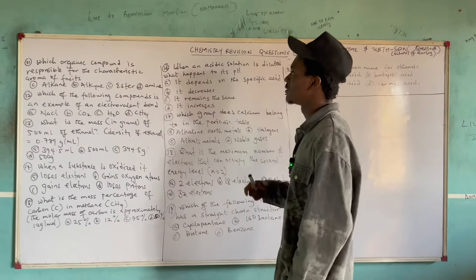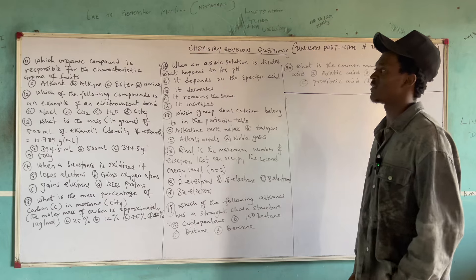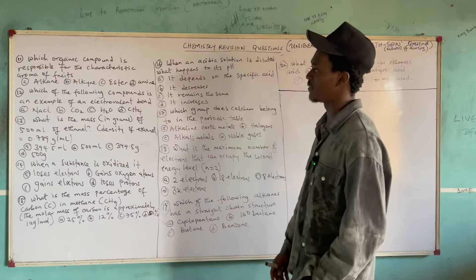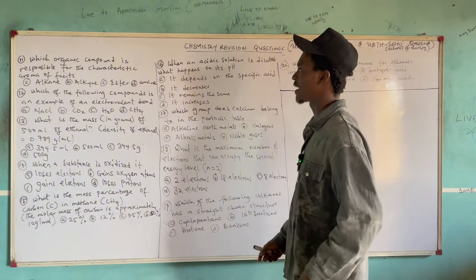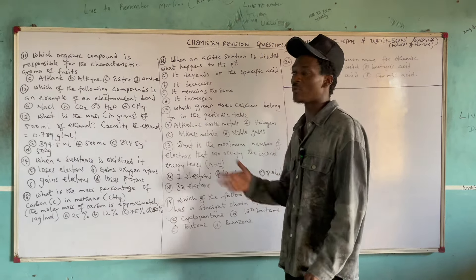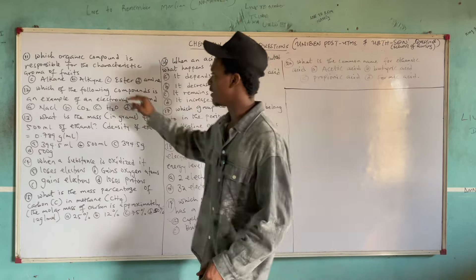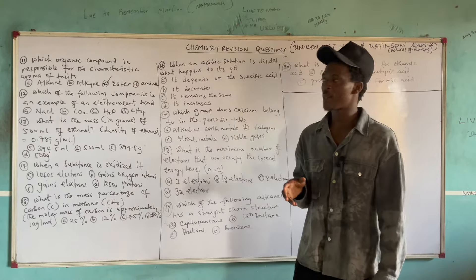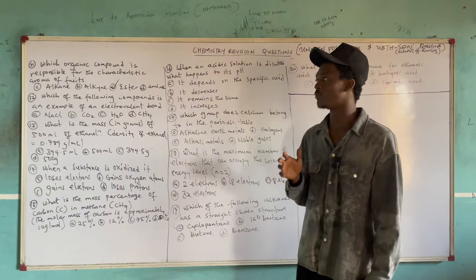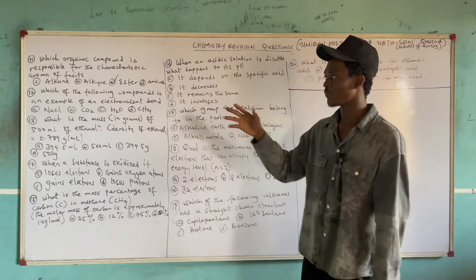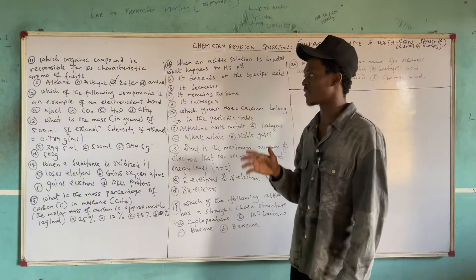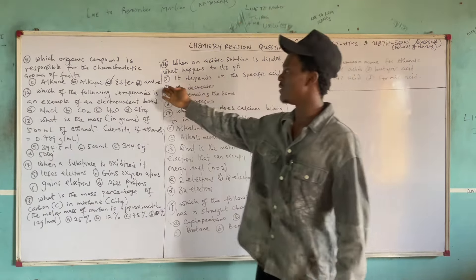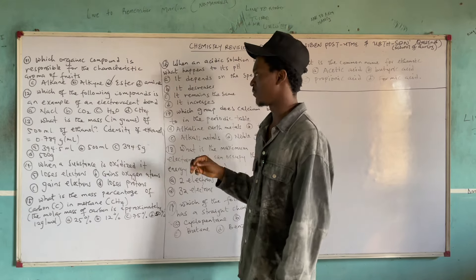Question 11: Which organic compound is responsible for the characteristic aroma of fruits? The options are alkane, alkene, ester, and amine. If you have studied organic chemistry well, you know that esters are known for their characteristic fruity smell. Amines, on the other hand, are known for a characteristic fishy smell. So the correct answer is ester — option C.